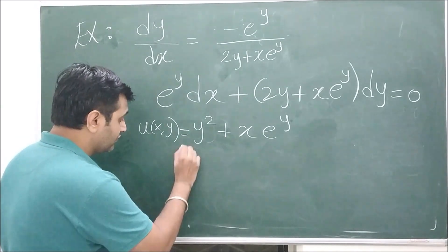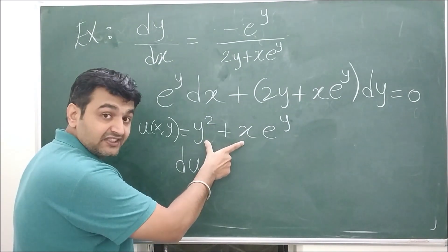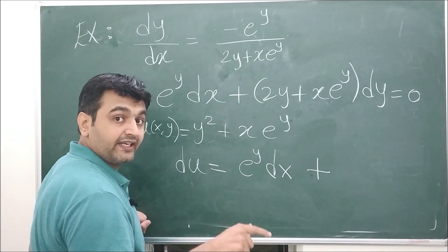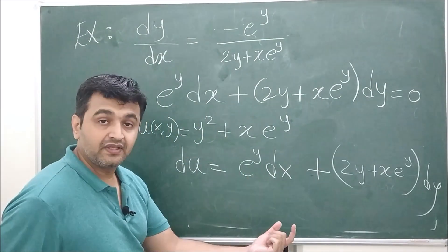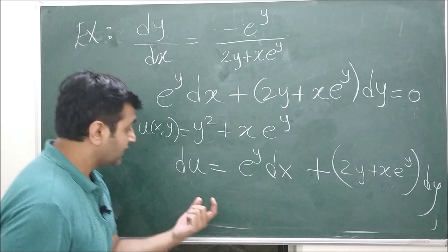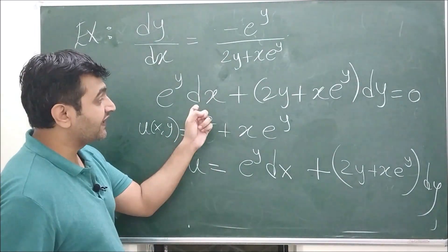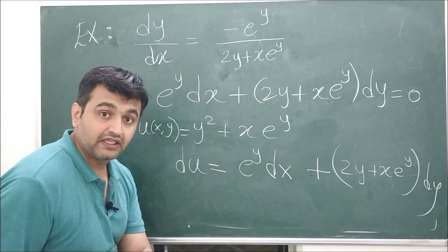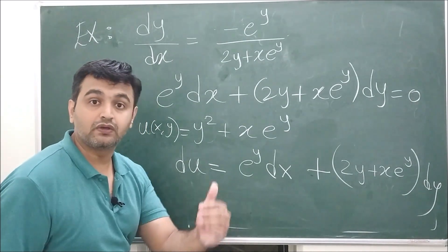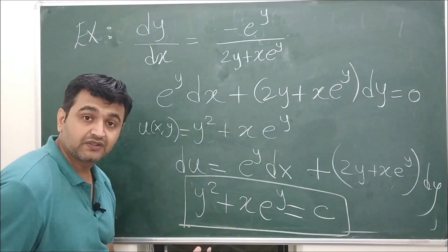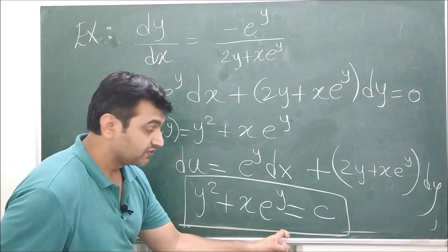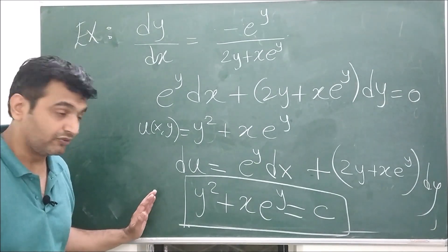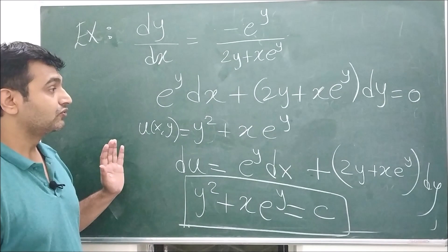Now, if we try u = xe^y + y², its total derivative is du = (∂u/∂x) dx + (∂u/∂y) dy = e^y dx + (2y + xe^y) dy. This matches the left-hand side of the differential equation exactly, meaning this is an exact differential equation. The solution is therefore u = c, which gives xe^y + y² = c as the general solution.